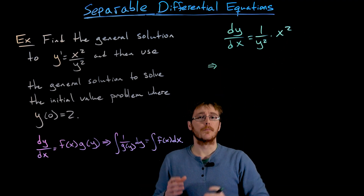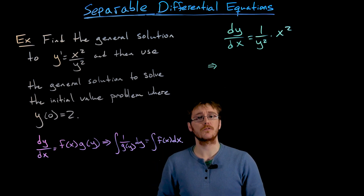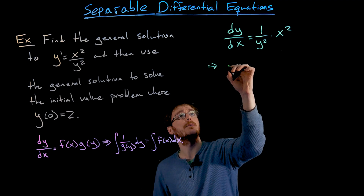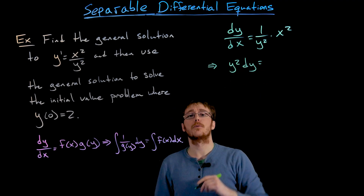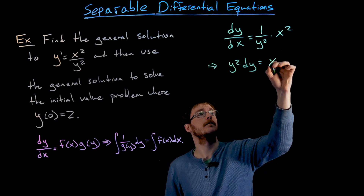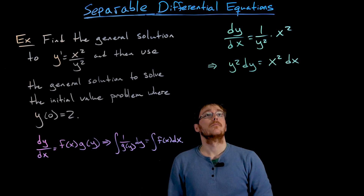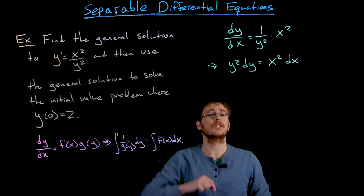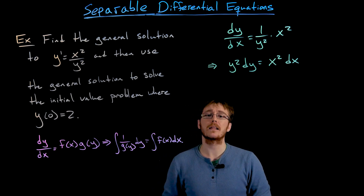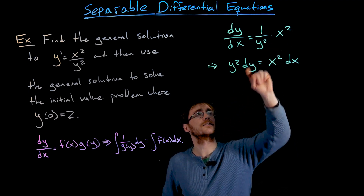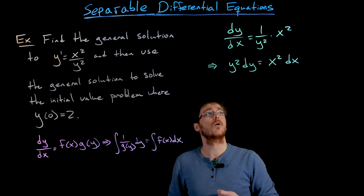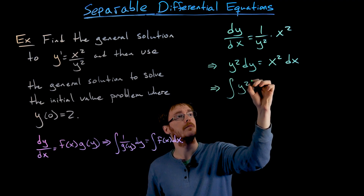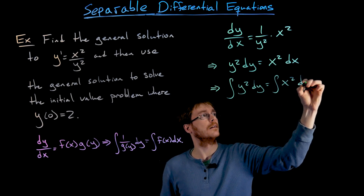Now we need to move quantities around so that everything with y or a differential of y is on the left-hand side, and everything involving x or dx is on the right-hand side. We multiply both sides by y squared as well as the differential dx. This clears out the denominator on the left and introduces a factor of y squared, giving us y squared dy on the left and x squared dx on the right.